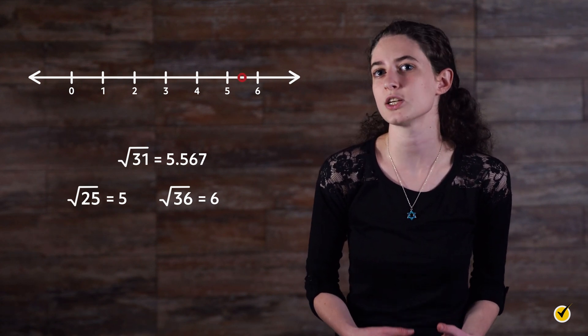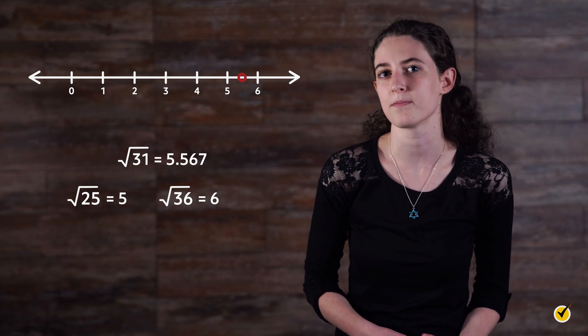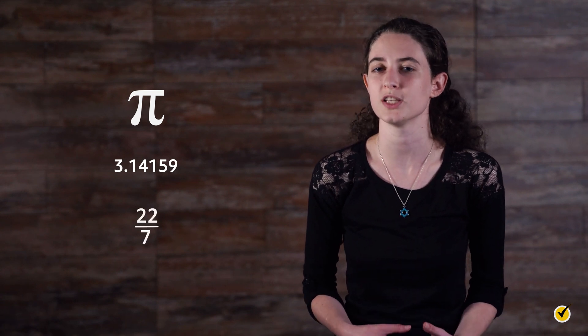There are actually some famous irrational numbers that you may have seen before. Pi, for example, is a non-repeating decimal that goes on for infinity every time, for every circle. When calculating with pi, a common estimate is 3.14159, or the fraction 22 over 7.